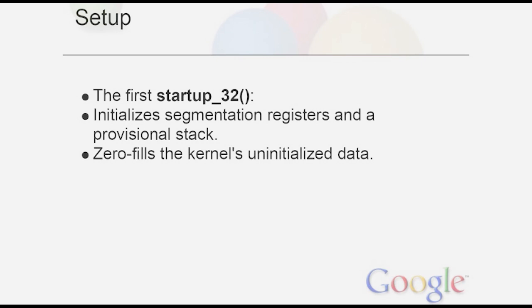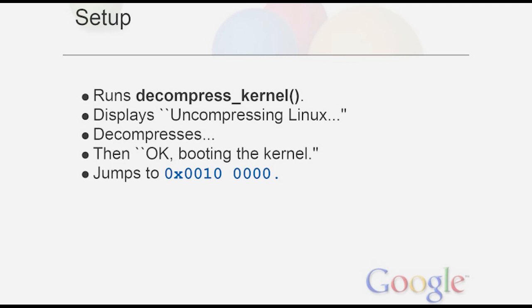Then the very important decompress_kernel function runs. Linux has a long tradition of compressed kernels; you'll see the message 'Uncompressing Linux...' on screen. The kernel decompresses into memory, then 'Booting the kernel' appears. We jump to another function also called startup_32, set up page tables using the CR3 register (which points to the current page table and is changed during context switches to switch each process's memory map), and enter kernel mode.